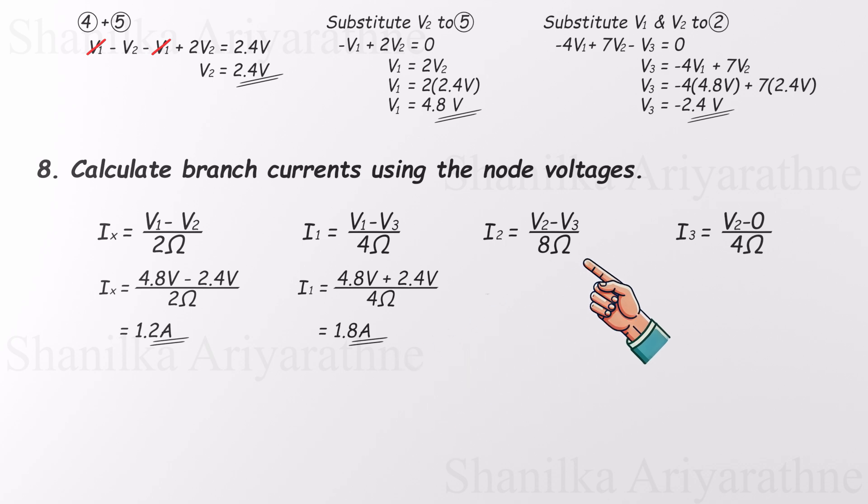Now for I2, we take V2 minus V3 divided by 8, 2.4 minus negative 2.4 divided by 8, and that gives us 0.6 amps. And finally, I3 is just V2 divided by 4, which is 2.4 divided by 4, giving 0.6 amps as well.